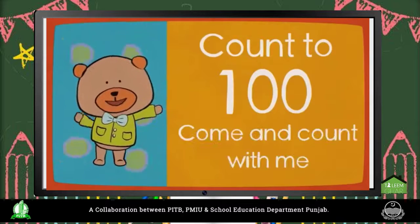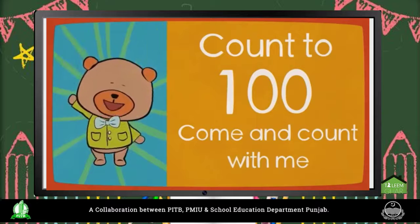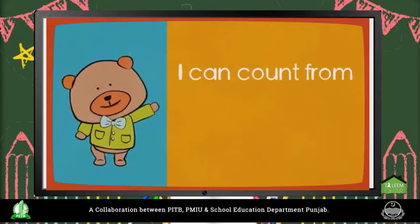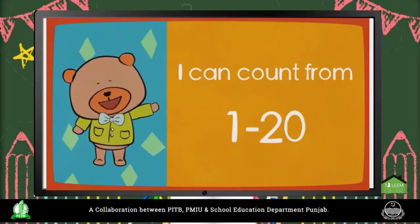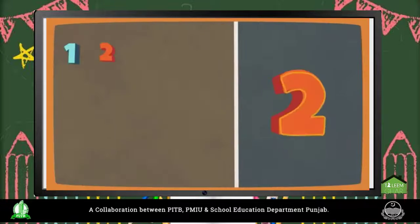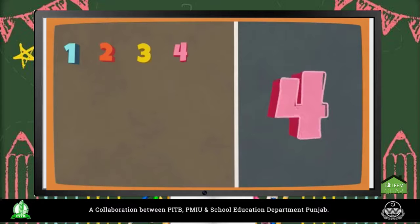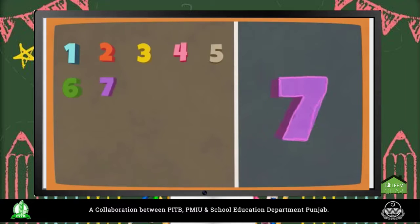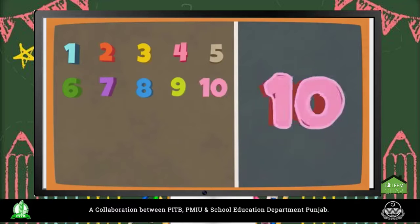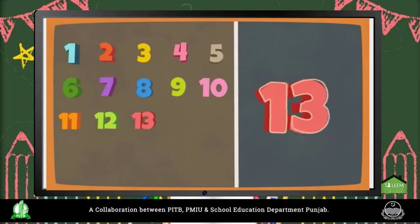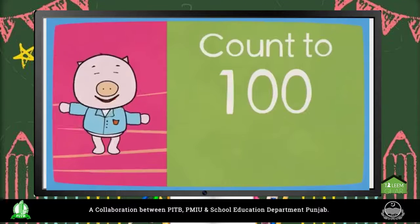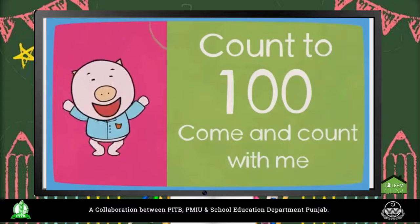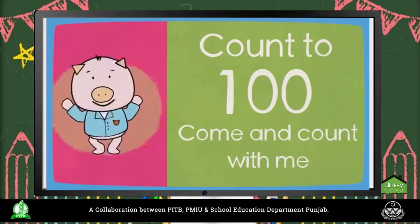Count to 100, come and count with me. Count to 100, come and count with me. I can count from 1 to 20. 1, 2, 3, 4, 5, 6, 7, 8, 9, 10, 11, 12, 13, 14, 15, 16, 17, 18, 19, 20.